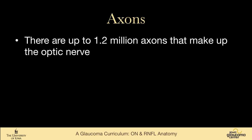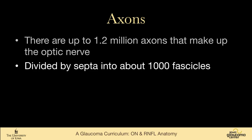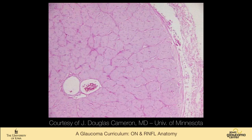The optic nerve is made up of up to a million and a quarter axons. They are divided in the nerve by septa into about 1,000 fascicles, which we can see here in this histopathology slide. These darker pink lines are the septa that divide the optic nerve into fascicles.